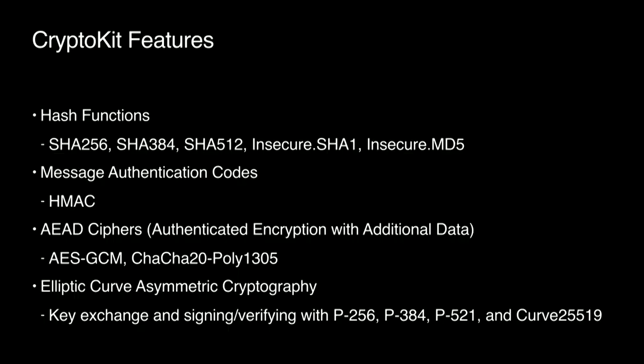CryptoKit has a lot of features for performing important cryptographic tasks. A number of hash functions — it's got all of the SHA-2 family of hashes, including some older and less secure ones. It provides HMACs for validating integrity of data. It provides a number of ciphers called AEAD ciphers, which are the gold standard way to encrypt data — they protect you against malicious data modification. It provides a full suite of implementations for asymmetric cryptography using elliptic curves, including full support for both key exchange and signing and verifying using the major curves standardized by NIST and the extremely popular Curve 25519. This covers the most important use cases people have today.